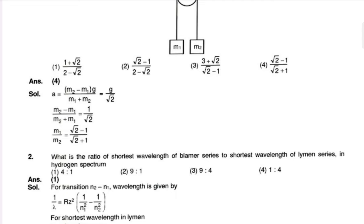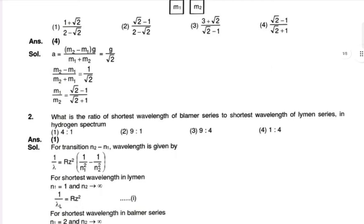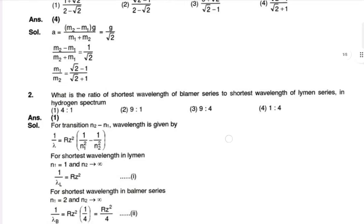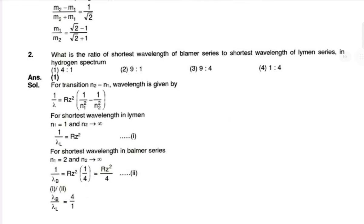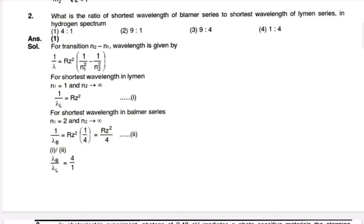We will calculate the ratio of the shortest wavelength of the Balmer series to the shortest wavelength of the Lyman series. For the shortest wavelength of the Lyman series, the transition is n2 to n1 with n1 equal to 1 and n2 equal to infinity. So the ratio is 4 is to 1.